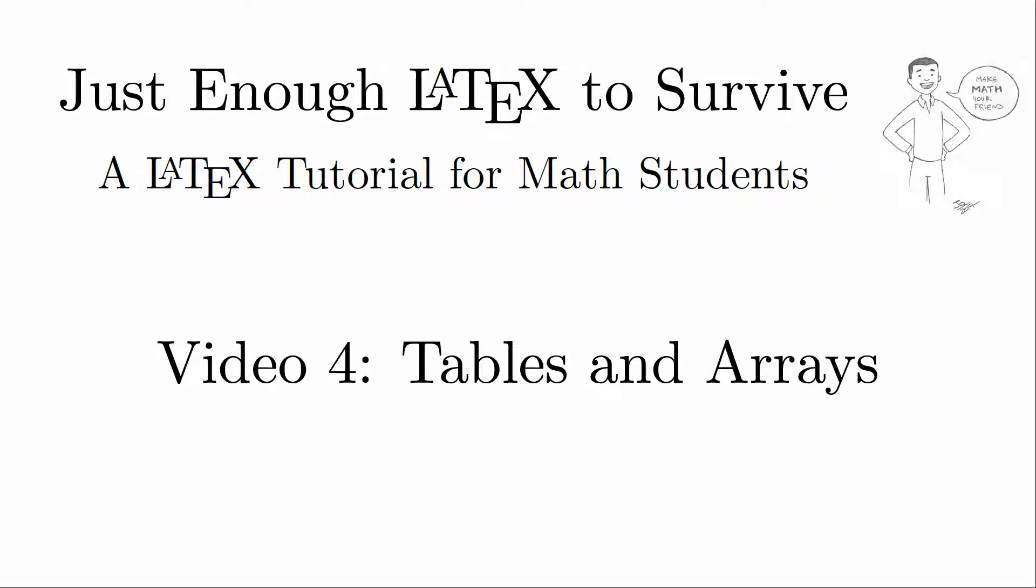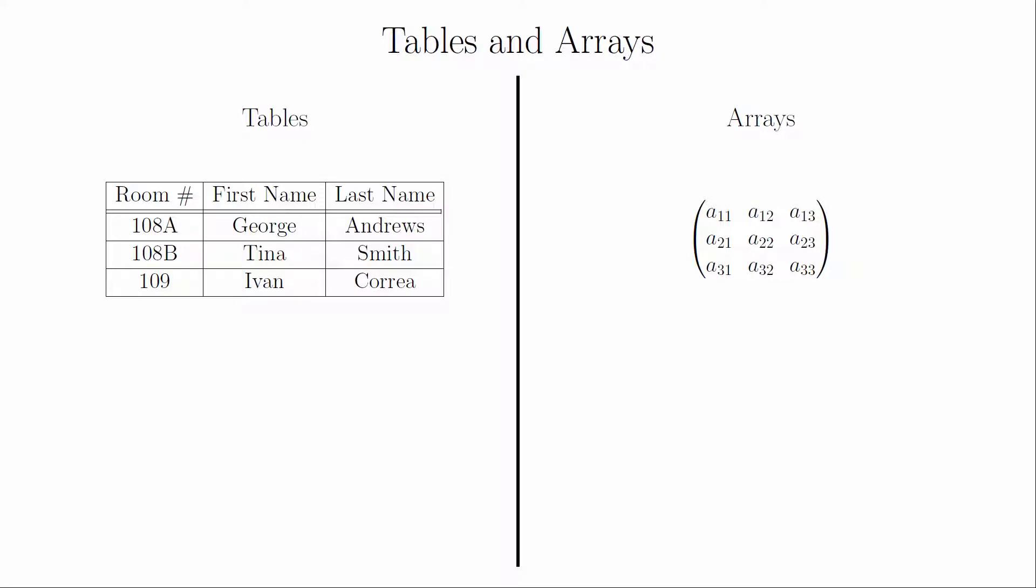In this video, we're going to look at two very similar and fairly common constructions in LaTeX: tables and arrays. Both tables and arrays are structured environments in which there are well-defined rows and columns. The primary difference is that arrays are mathematical objects, whereas tables are text-based.